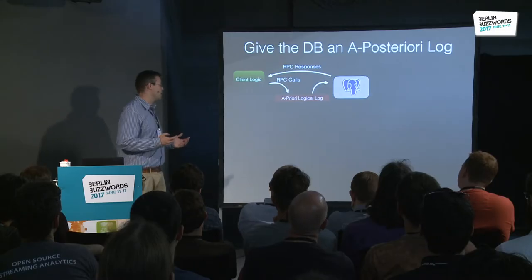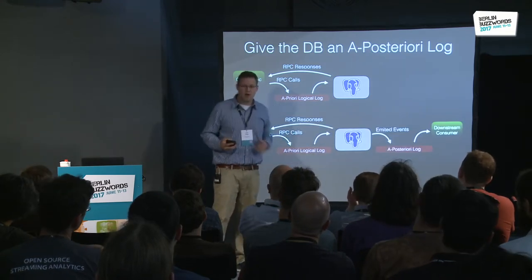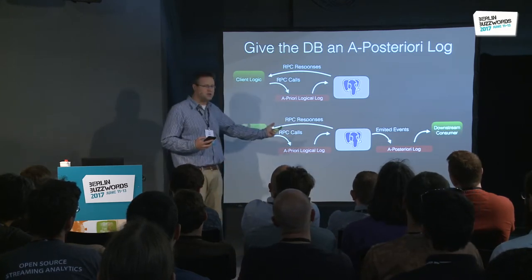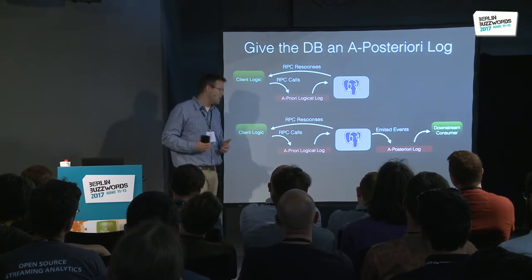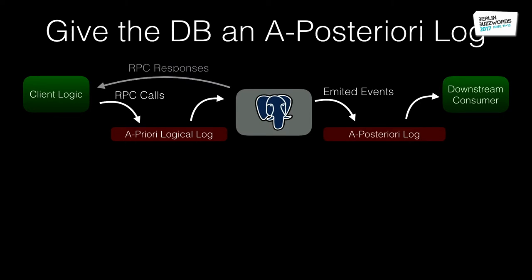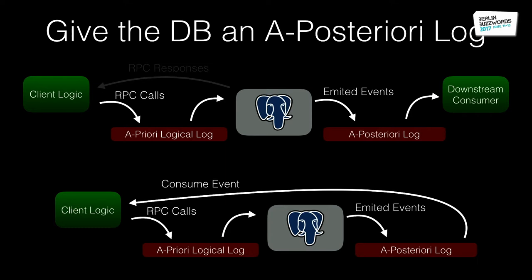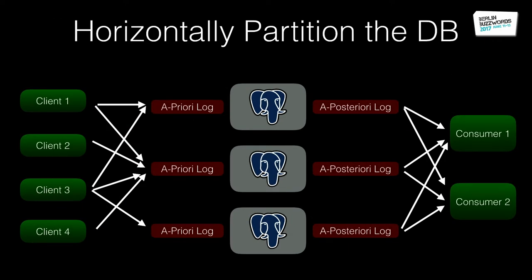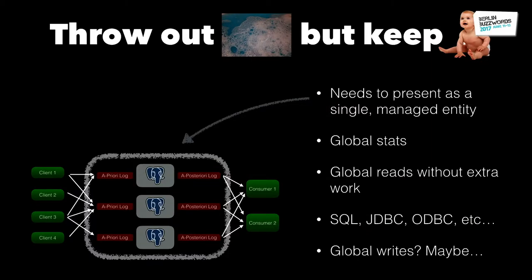The a posteriori log is sort of the same idea: I want my database to be able to emit events. Rather than querying the database to ask 'did anything change?', I want my stored procedure logic to say 'this event happened — you said Beetlejuice three times — push an event out into my log.' With a posteriori log, a downstream consumer can consume that event from the client logic in a more streamy way, with the a priori log and a posteriori log, everything moving through — but with a database in the middle. I can also horizontally partition the database, but I need to present it as a single managed entity: global stats, global reads, without extra work — it should still act like a database.